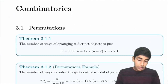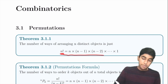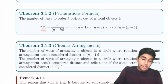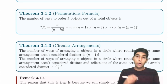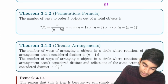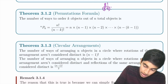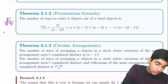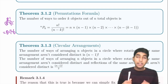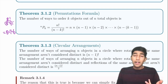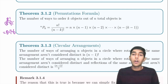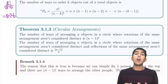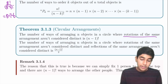Now combinatorics. The number of ways of arranging n objects in a line is n!. Permutations: ordering k objects out of n total is nPk = n! / (n−k)!. For circular arrangements of n objects, it's (n−1)! if rotations are not considered distinct. If reflections are also not distinct, divide by an additional factor of 2.